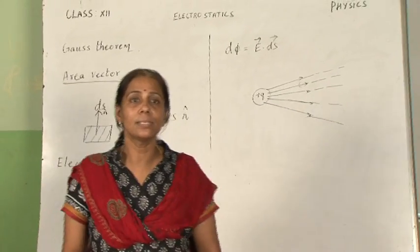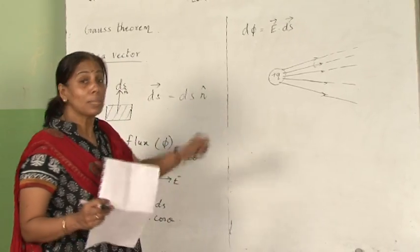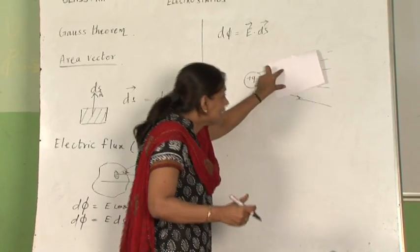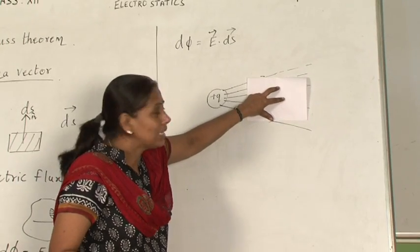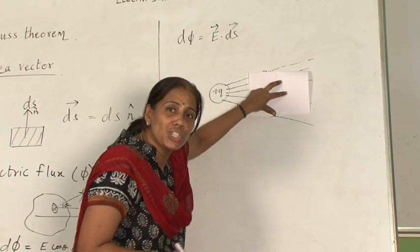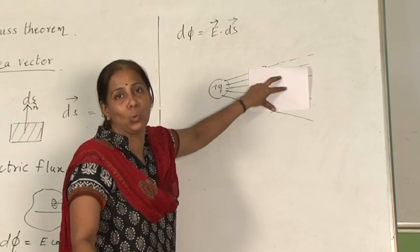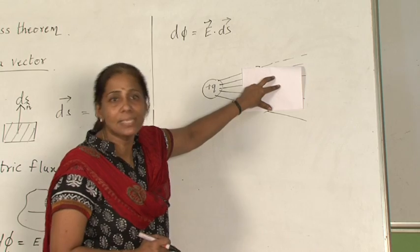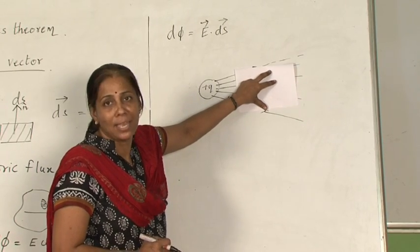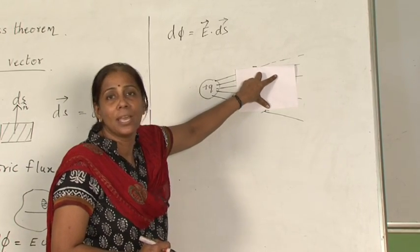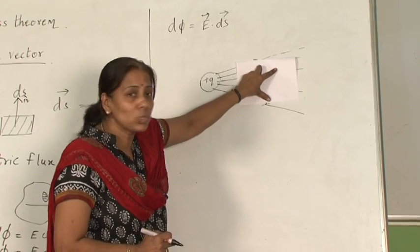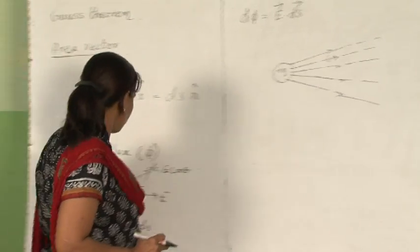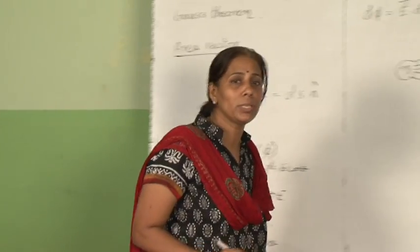Now, one more thing. Suppose we keep the surface like this — whether the lines of force are linking or going through the sheet? No. So here the electric flux will be 0. For electric flux to exist, the lines of force should cross or pass through the surface area we are considering. If I keep the surface like this, it is not crossing. Here the angle between the electric field and the area vector is 90 degrees, so the flux will be 0.